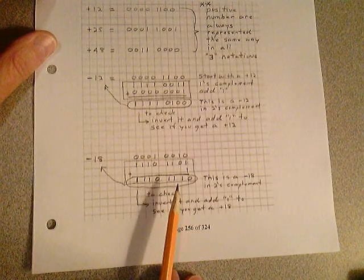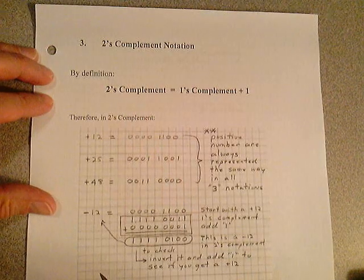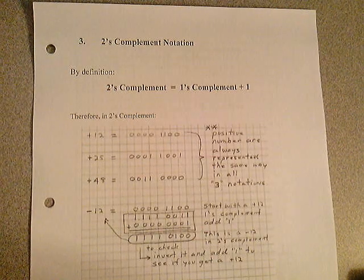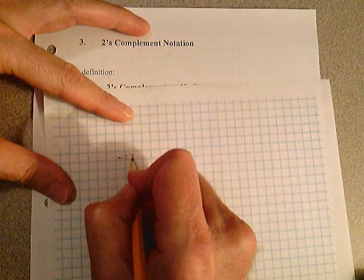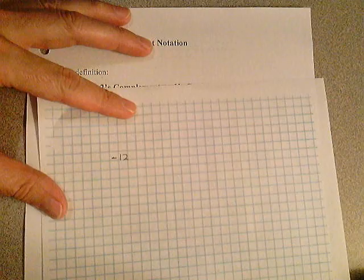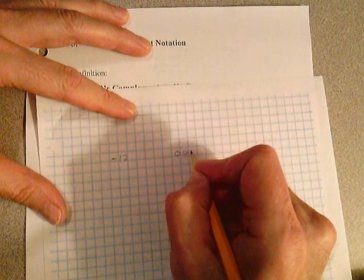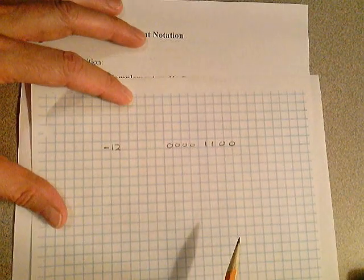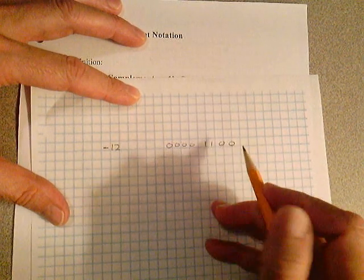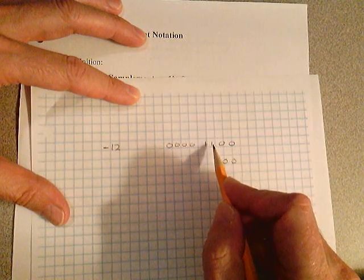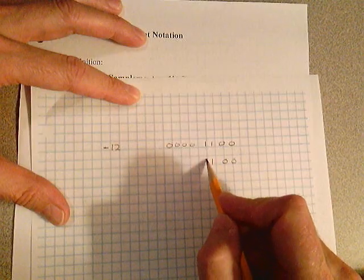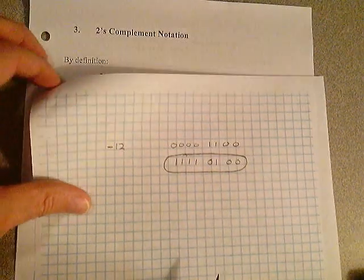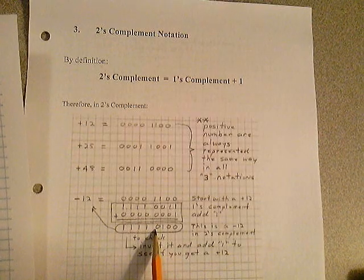I'm going to show you a very convenient way of taking the 2's complement of a number. I learned this when I was at Texas Instruments — one of the engineers showed this to me. Take a negative 12: start with a plus 12. Rather than taking the 1's complement and adding 1, you start on the right-hand side and copy down the digits until you come to the first 1. When you come to the first 1, you write it down, and then you invert everything thereafter. That is a negative 12 — look back, there was the negative 12, and here it is.